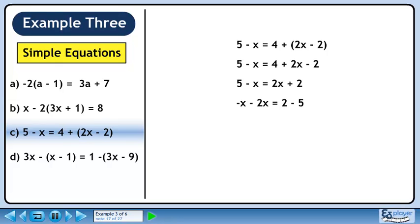Collect terms with x on the left side and constants on the right side. This gives minus 3x equals minus 3. Divide both sides by minus 3. Our final answer is x equals 1.